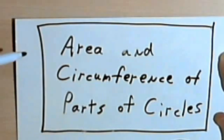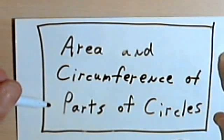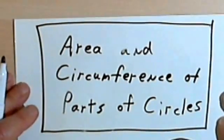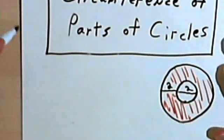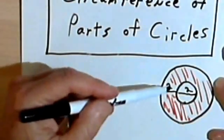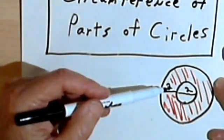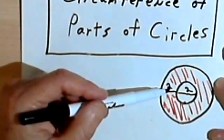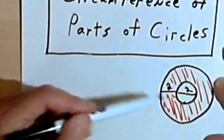This video is going to be about finding the area and circumference of parts of circles. Just as we did with rectangles and triangles, we're going to look at figures that have circular elements and use the rules we know about circles to figure out more complicated problems.